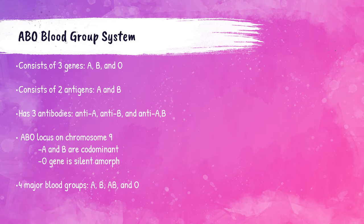In short, genetics determine what antigens are going to be present on the surface of the red blood cell. And if a patient is exposed to a foreign red blood cell antigen via blood transfusion or a pregnancy, the body's immune system can recognize this antigen as foreign and develop an antibody that is specific for that antigen. That's really what all of blood bank is about — antigen and antibody interactions.